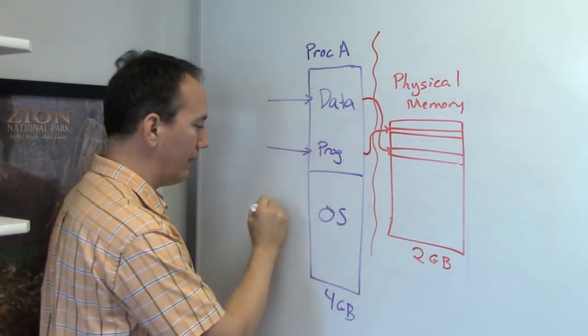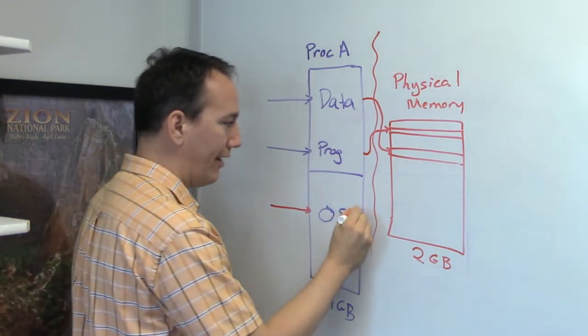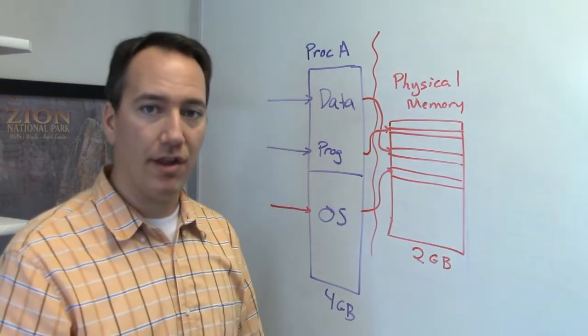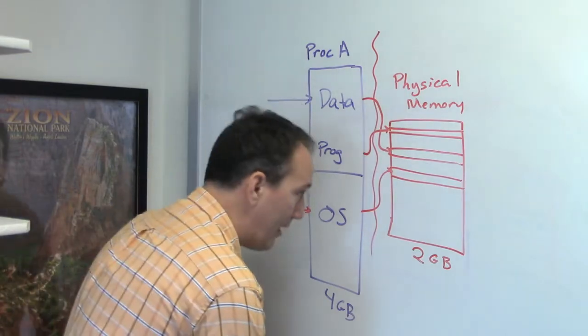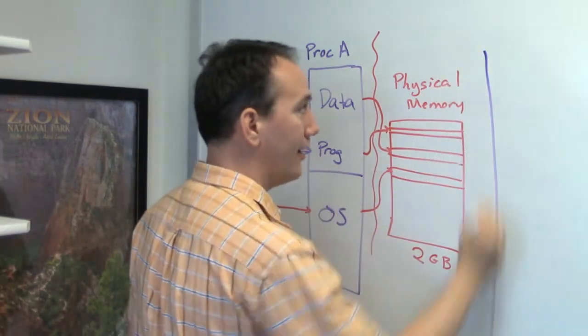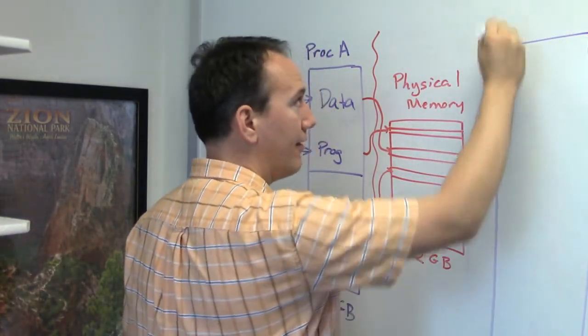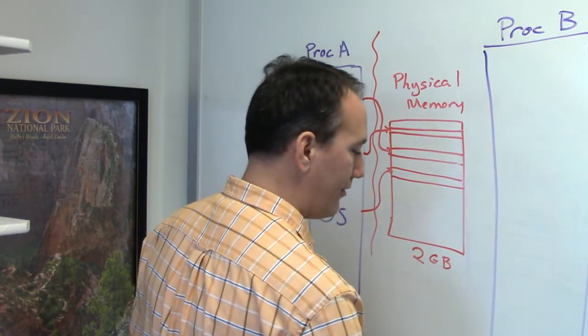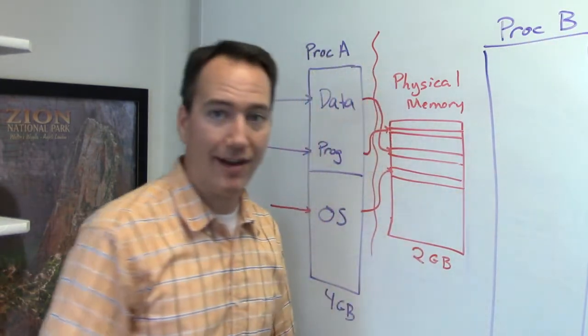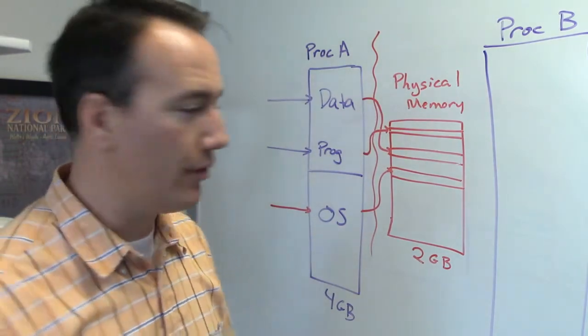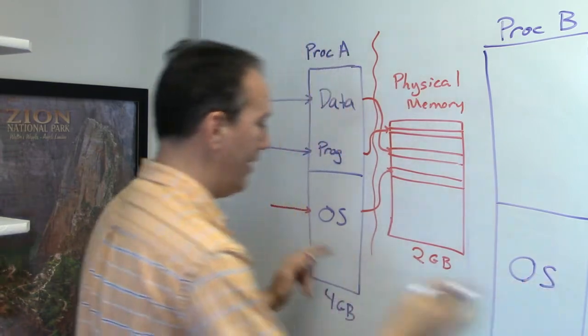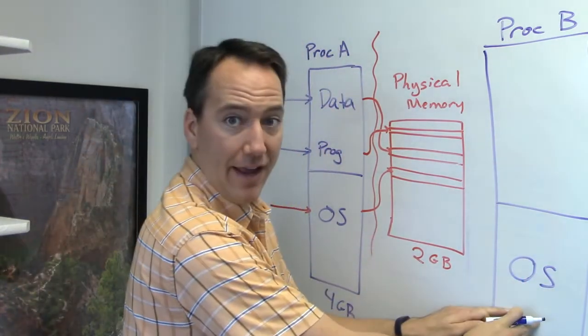And of course, too, I'm loading and storing instructions from the OS, and those are coming into physical memory as well. Now let me show you the beauty of this setup. I might have another program running right here, let me just draw a box for process B now. And the operating system can notify the process that it also has four gigabytes of storage space. And of course, the operating system is the same in the first process as it is in the second process.